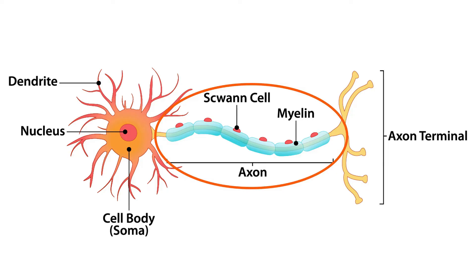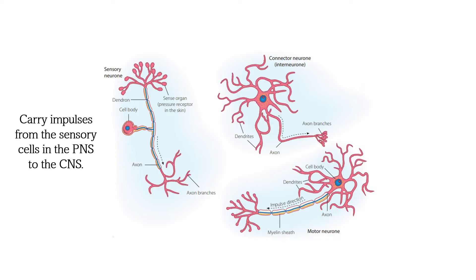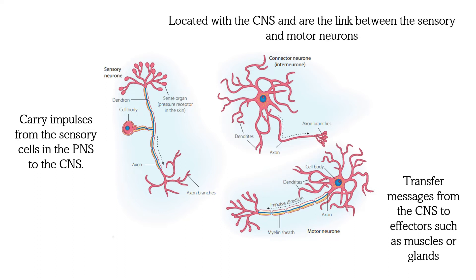A very long and single extension of the cytoplasm of the cell body is called the axon. Neurons are classified according to their function and the direction impulses are carried. Sensory neurons carry impulses from the sensory cells to the CNS. Motor neurons transmit messages from the CNS to effectors such as muscles or glands. Interneurons are located within the CNS and are the link between sensory and motor neurons.